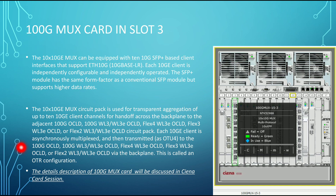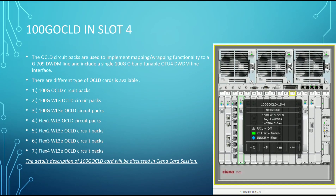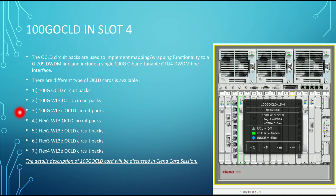The 100G OCLD card is in slot 4. The OCLD circuit packs implement mapping and wrapping functionality to a G.0709 DWDM line and include a single 100G C-band tunable OTU4 DWDM line interface connecting to the MUX/DEMUX unit. OCLD stands for optical channel laser detection. Types include: 100G OCLD, 100G OCLD WL3 (Wave Logic 3), Flex II (in WL3 and WL3E variants), and Flex III and Flex IV (in WL3E variant only).